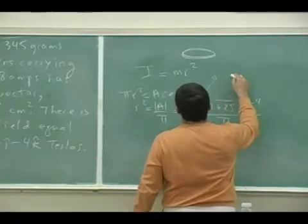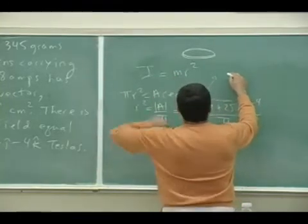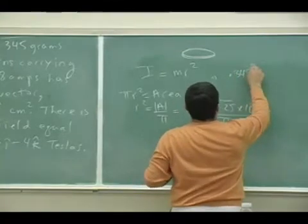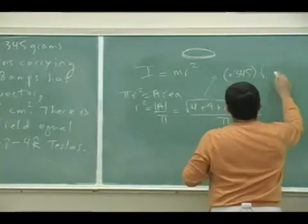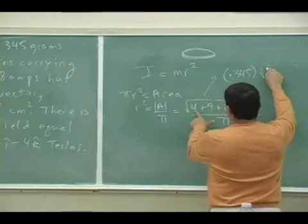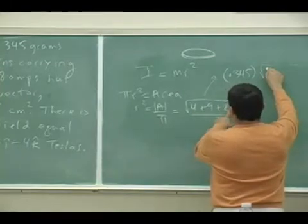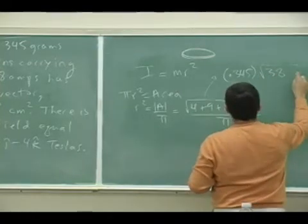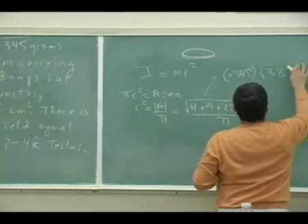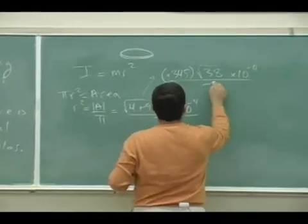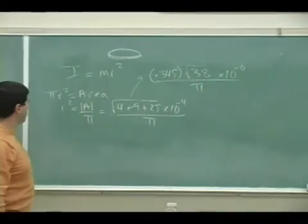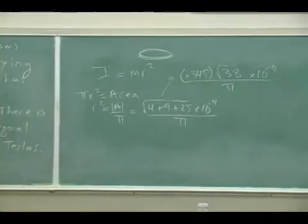Magnitude of area divided by pi. So we don't really need the r. Then we just multiply this by the mass m that gives you the moment of inertia. So put it in there. The mass m is 345 grams so 0.345 kilogram times square root of 38 over pi. That's the moment of inertia.